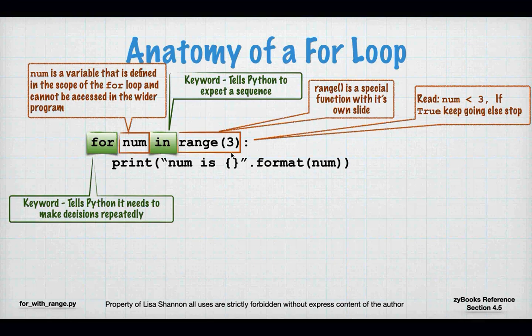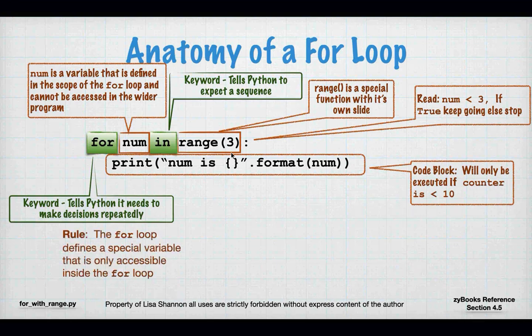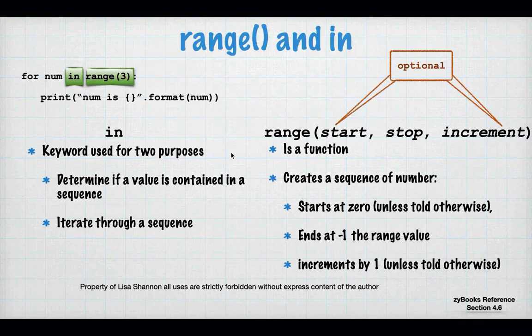The for loop defines a special variable only accessible inside the loop — in this case 'num'. Range is a special function used with for loops. Like all conditional statements, a for loop statement must end with a colon — just like while, if, elif, and else.